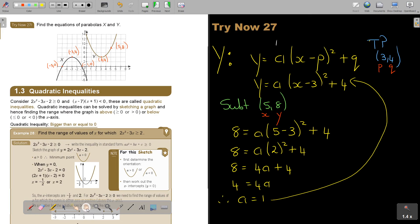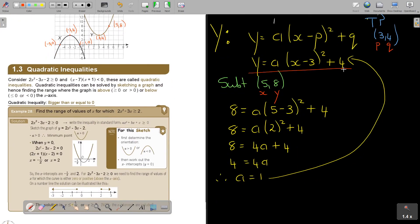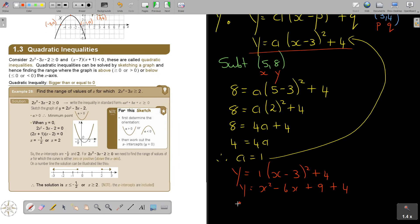So y is equal to 1, x minus 3 squared plus 4. And now just simplify this. Remember the short way. So it's x squared minus 6x plus 9 plus 4. So therefore y is equal to x squared minus 6x plus 13, and that will be your final answer. And that is equation y.